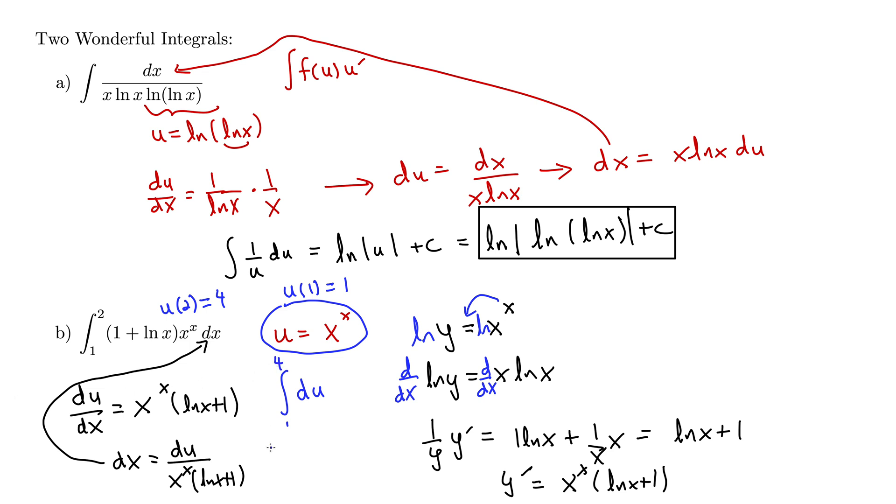Well the integral of du is u, and there you have it, u evaluated from 1 to 4. Well that's 4 minus 1, which is 3. This crazy looking integral evaluates to simply 3, with a very elegant u substitution. So there you have it, two wonderful integrals, this is u substitution at its finest.